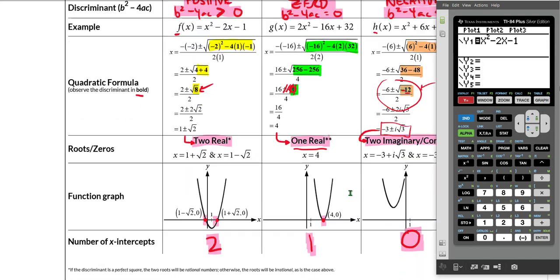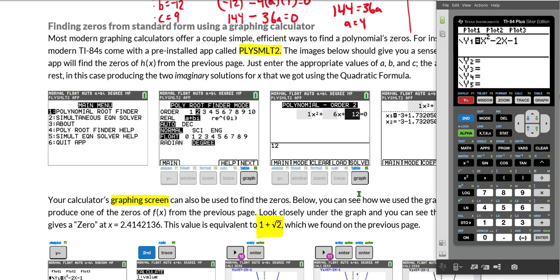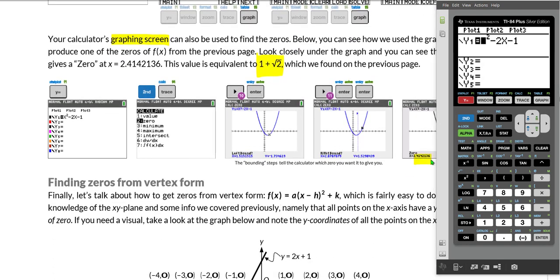And that is what we just produced, that 2.414 is equivalent to 1 + √2. So we just made the calculator produce one of the zeros using our graphing screen. If we wanted the left zero, we would just have to bound that zero in the same way that we bounded or captured the right zero, and the calculator would produce a value for this left zero.